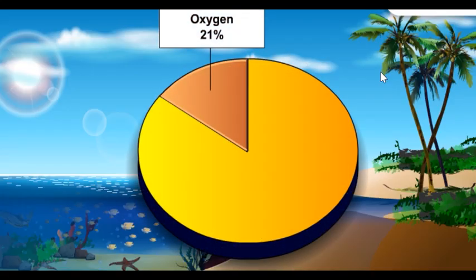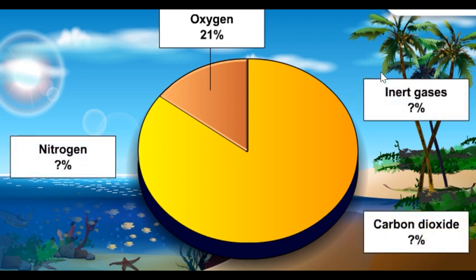Based on the activity, we can see that oxygen made up about one-fifth of air. Based on scientific research, scientists have found out that the actual percentage of oxygen in air is about 21%.